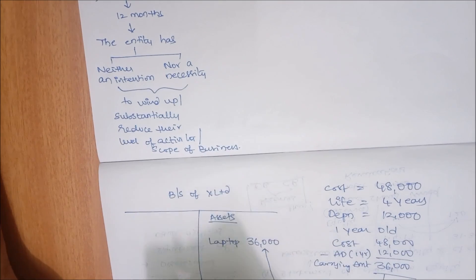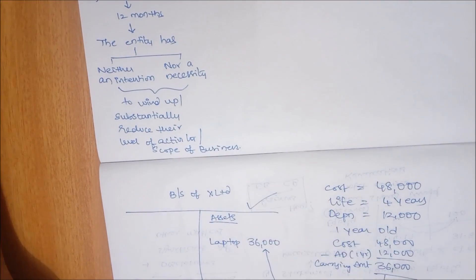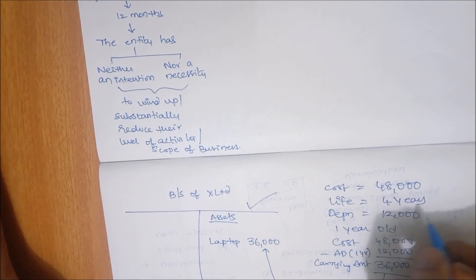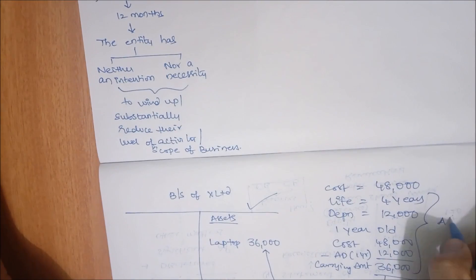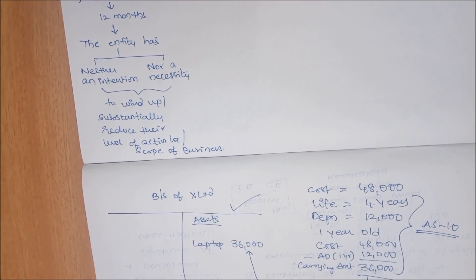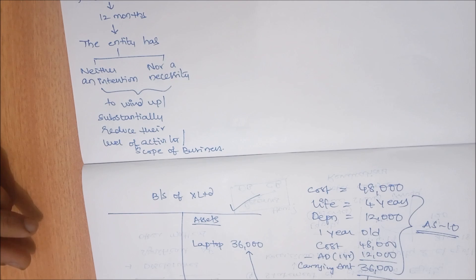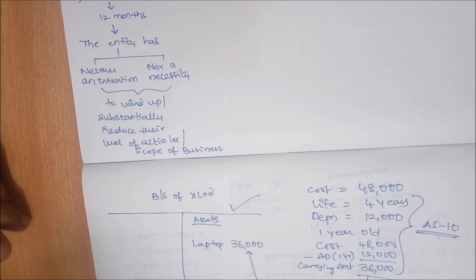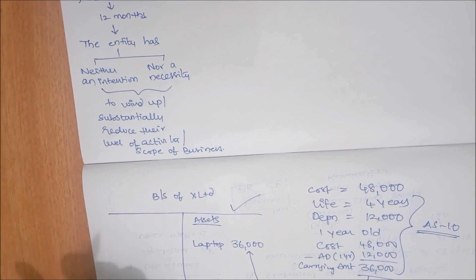Is showing this asset at 36,000 in the balance sheet correct? Absolutely yes. Even under Accounting Standard 10 — Property, Plant and Equipment — this is the cost model treatment: historical cost minus accumulated depreciation. But remember, accounting standards apply when the entity is a going concern.